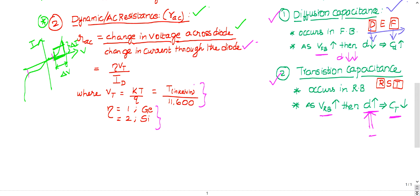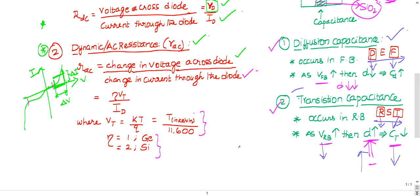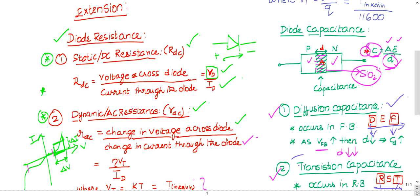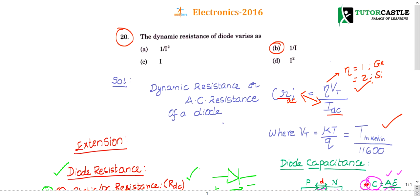Transition capacitance follows the alphabet series R-S-T — R for reverse bias, T for transition — so transition capacitance operates in reverse bias. As reverse voltage increases, the depletion width increases, and transition capacitance decreases. Remember static and dynamic resistance and diffusion and transition capacitance properties — from these two concepts, one question can be expected. Thank you.